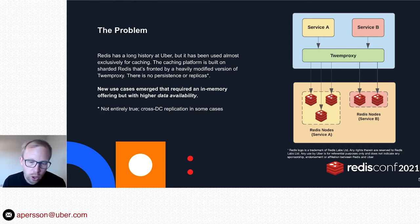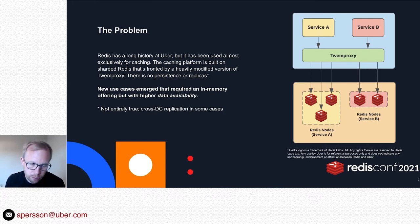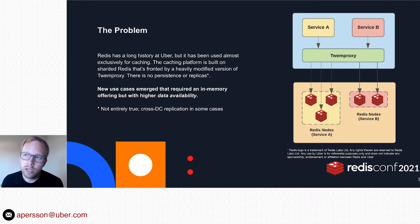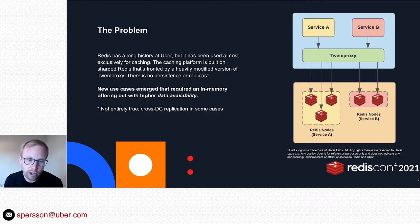So if a node fails, data is lost. We started to see some new use cases come up where having higher data availability was very important. One new such use case was where we wanted to use Redis as a serving layer for data that was only periodically being refreshed — in this case from Hadoop. So losing data here was not an option.